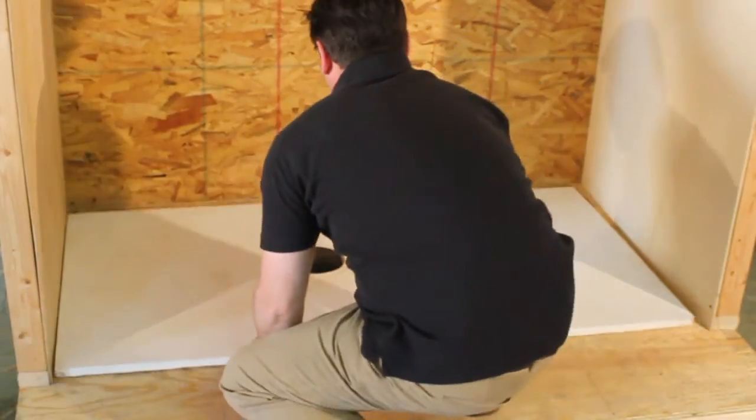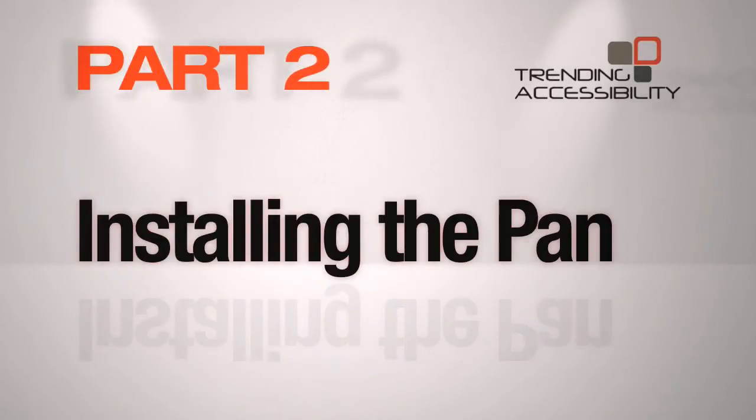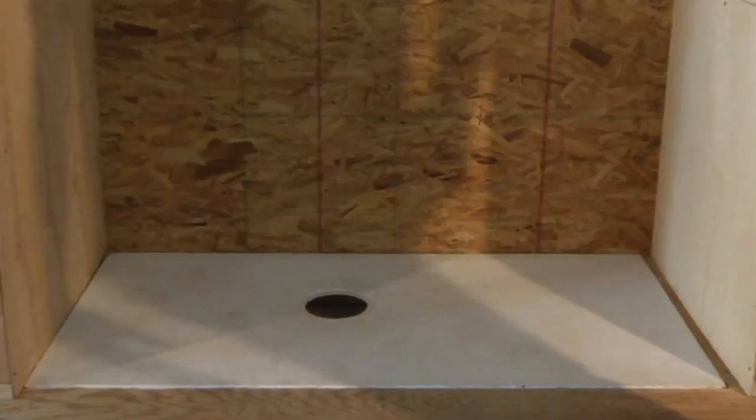Your prep is done, so now you can install the shower pan. Part 2: Installing the pan. You have now prepared your space for a barrier-free, curbless shower. Now you're going to install the shower pan.